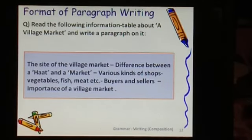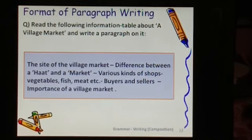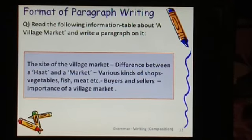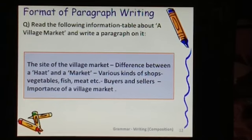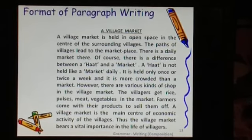The format of paragraph writing: we have been given clues — various points which can be used to develop into a paragraph. For example, points like 'site of the village market', 'difference between a market and a haat', and 'various kinds of shops'. These are different hints which you have to elongate and develop into various sentences. Here is a format: we are starting with 'Village Market' as the heading, written with capital letters. The paragraph has already been written here — you may go through it and find how we have developed it.